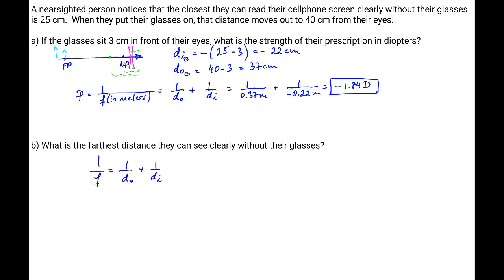So the object distance we want it to be as far away as possible so we'll set it equal to infinity. So then we have 1 over infinity plus 1 over d_i.